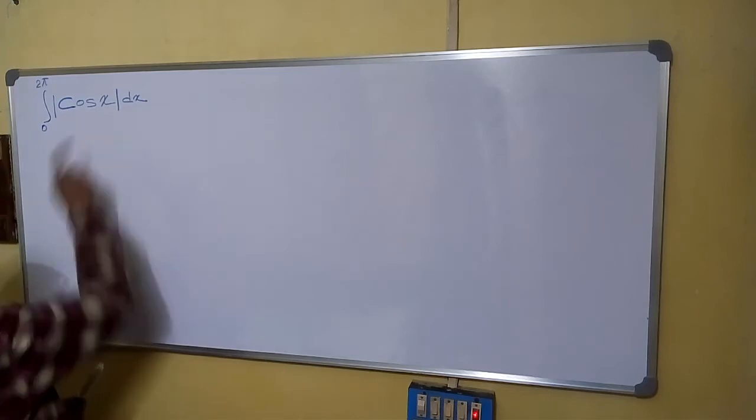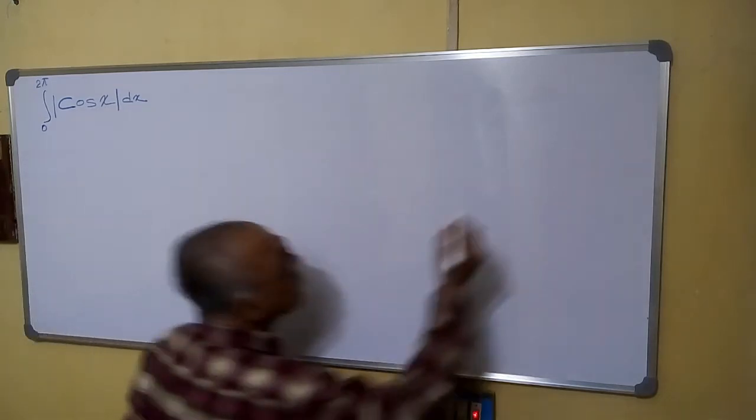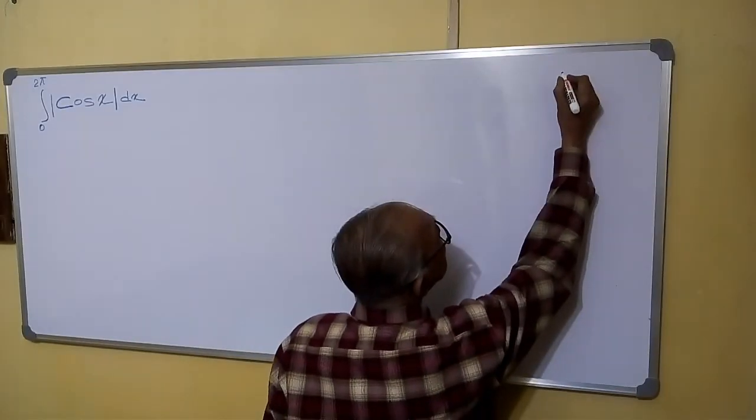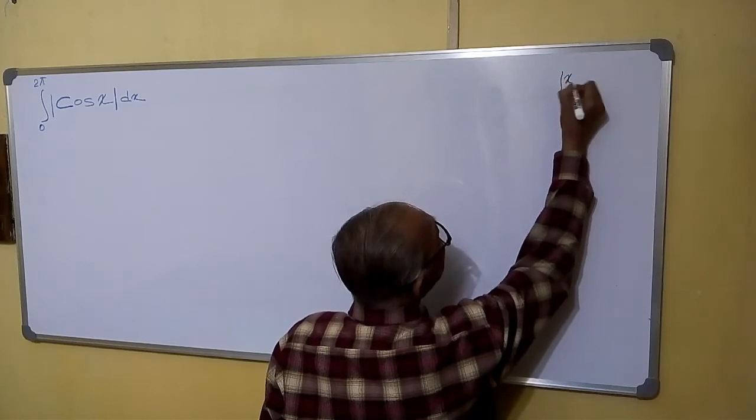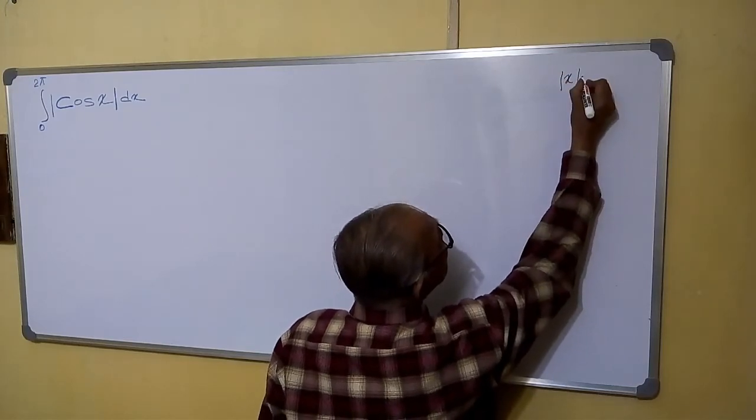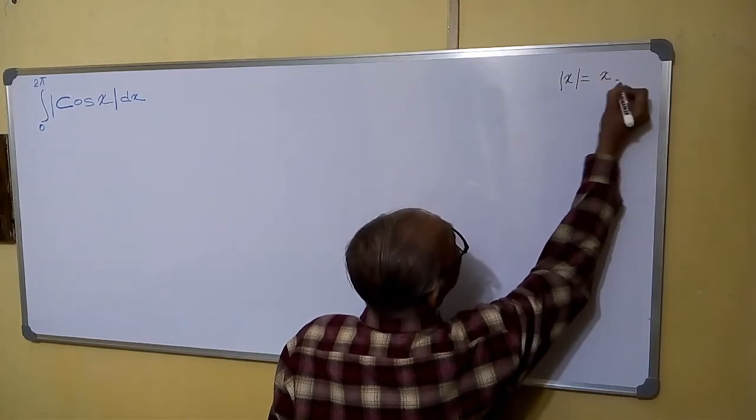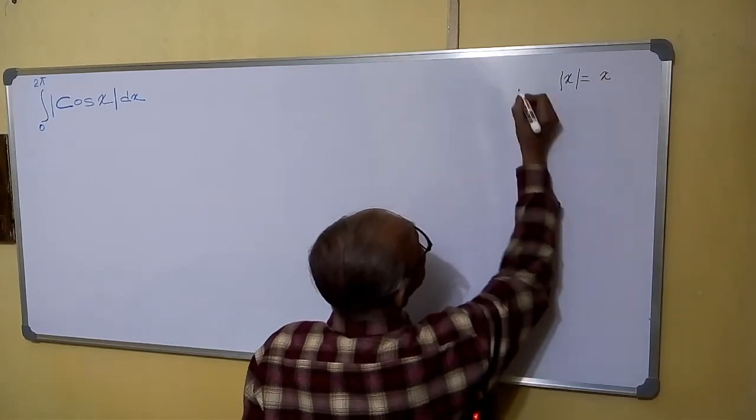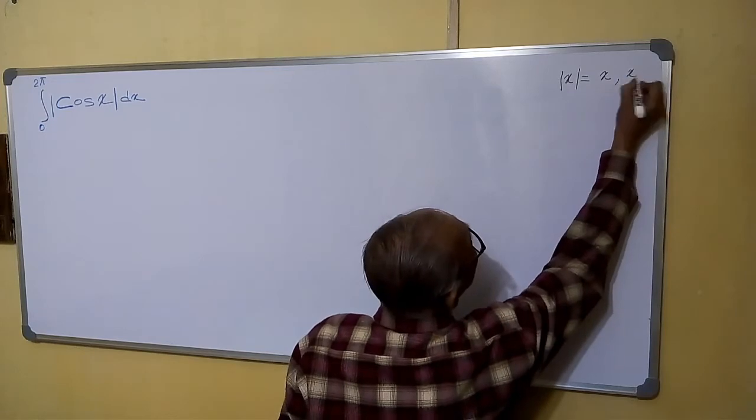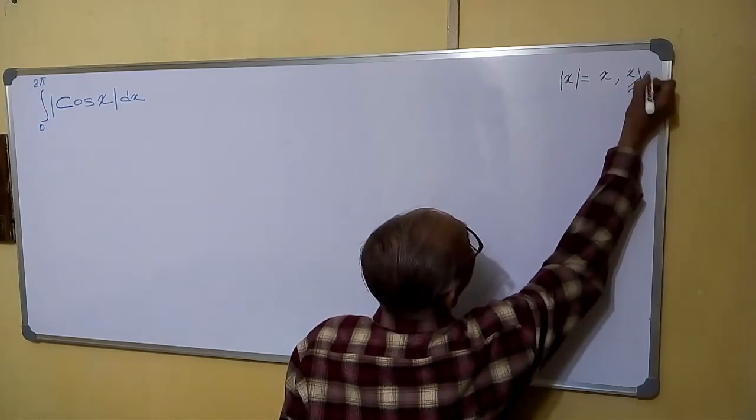Follow us for calculating mod. First of all, see, you have to remember this: mod of x equals x when x is greater than or equal to 0, and mod of x equals minus x when x is less than 0.